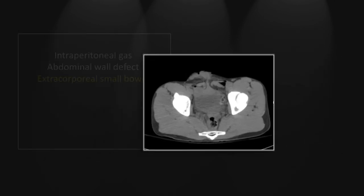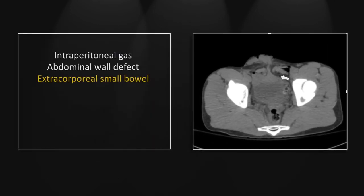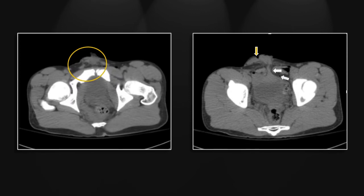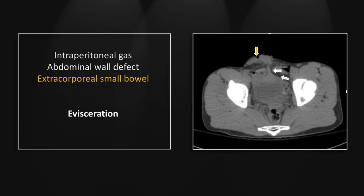Our next case is a frank evisceration. There is a small focus of extraluminal intraperitoneal gas and a defect in the anterior abdominal wall with soft tissue density extending out to the surface. Many times when you see that soft tissue density on the anterior aspect of the abdominal wall you think: is that a dressing? Could those really be bowel loops? And in fact they are — you can see them extending through that defect and lying on the anterior abdominal wall. This was an ATV wreck, and it was the handlebars that created the abdominal wall defect.